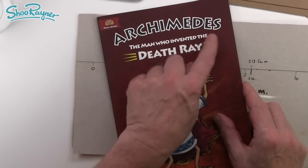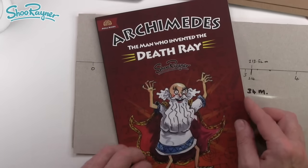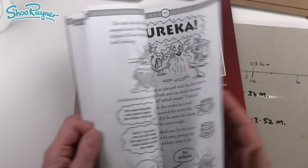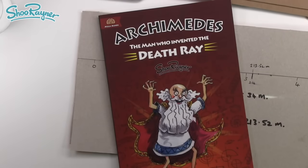How do I know all this? I wrote the book. Archimedes the man who invented the death ray. Click the links and go and get a copy for yourself. And find out what a genius he really was.